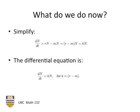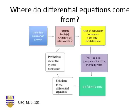Okay, what do we do next? Well, we have a differential equation. We can simplify it down by letting the constant k represent the difference of r minus m, the birth minus the mortality. And so we have a simpler differential equation, dn by dt equals kn. And this is indeed the same as the differential equation that we had in the green box, where r minus m stands for the constant k.